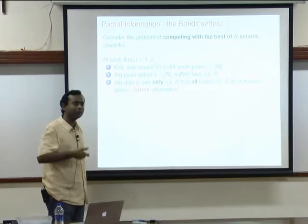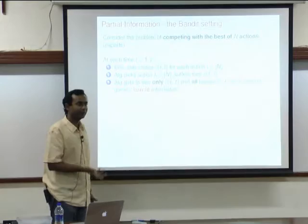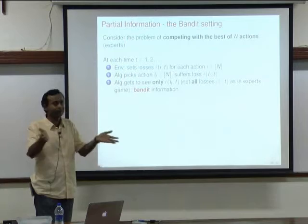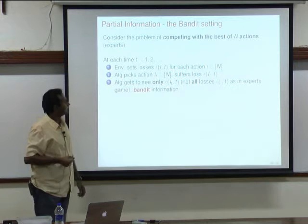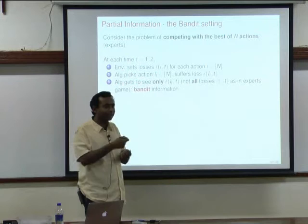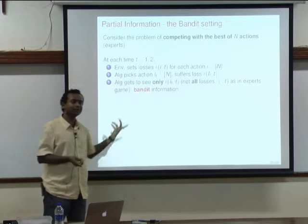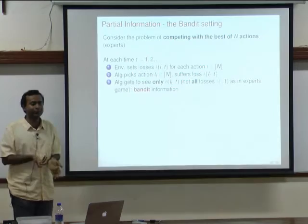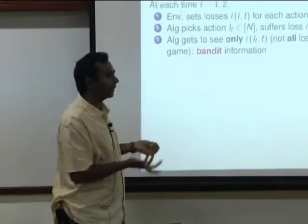This connects to a lot of problems in online recommendation systems. Suppose you are a user browsing on a website. The recommendation system has the capacity to show you one advertisement, and there are certain types of advertisements it can show you. When it shows you a particular action, you basically decide to click on it or not, indicating your utility for that advertisement. The feedback the system gets is only about the ad that you showed — you will not be able to observe consequences of actions that you did not take.